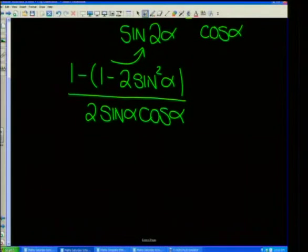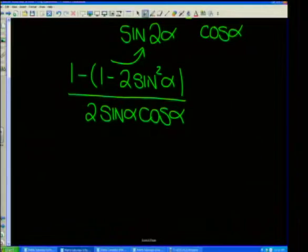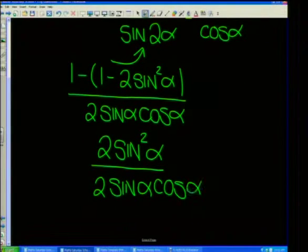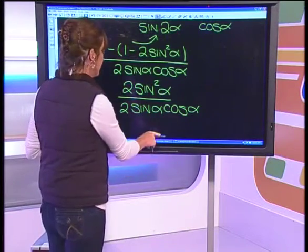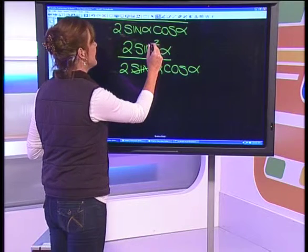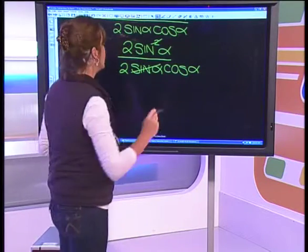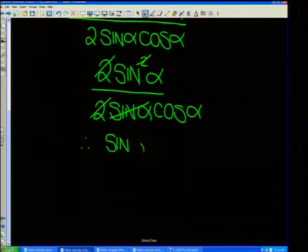Now I distribute the negative into the bracket. That gives us 1 minus 1 — those cancel out nicely — and negative times negative gives a positive 2sin²α. So the numerator becomes 2sin²α, and the denominator is 2sinα·cosα. The sinα on the bottom cancels with one of the sines on top, and the twos cancel each other out.